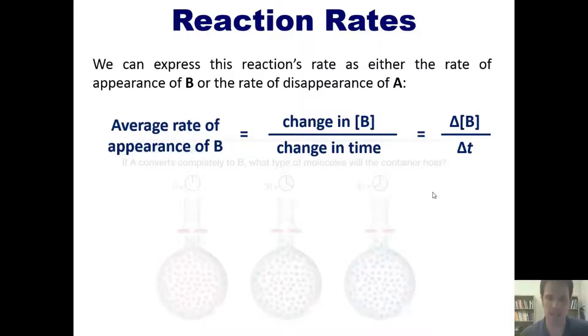The average rate of appearance of B, then, would equal the change in the concentration, or molarity, of B over time, which we could re-express as delta concentration of B over delta T.